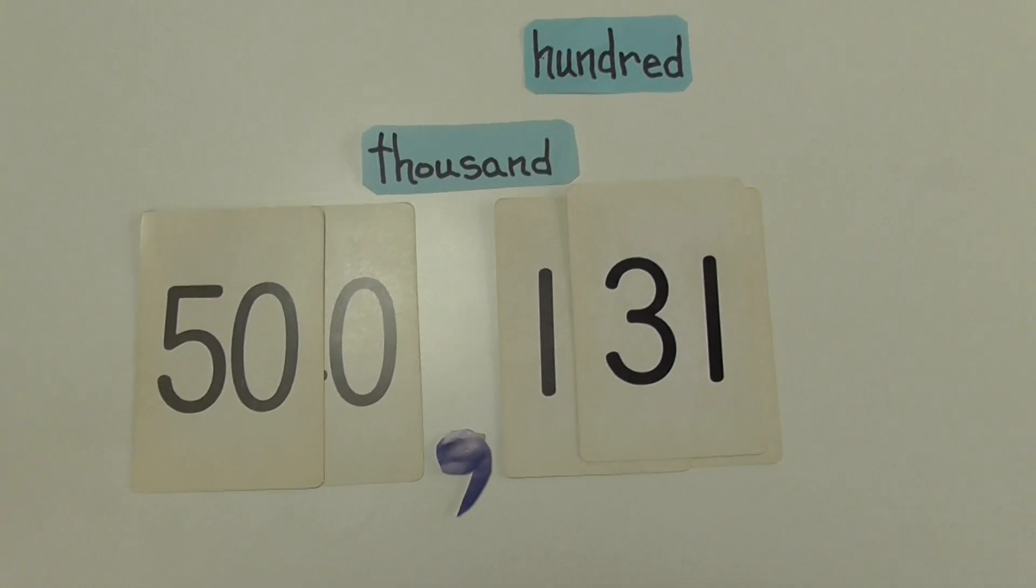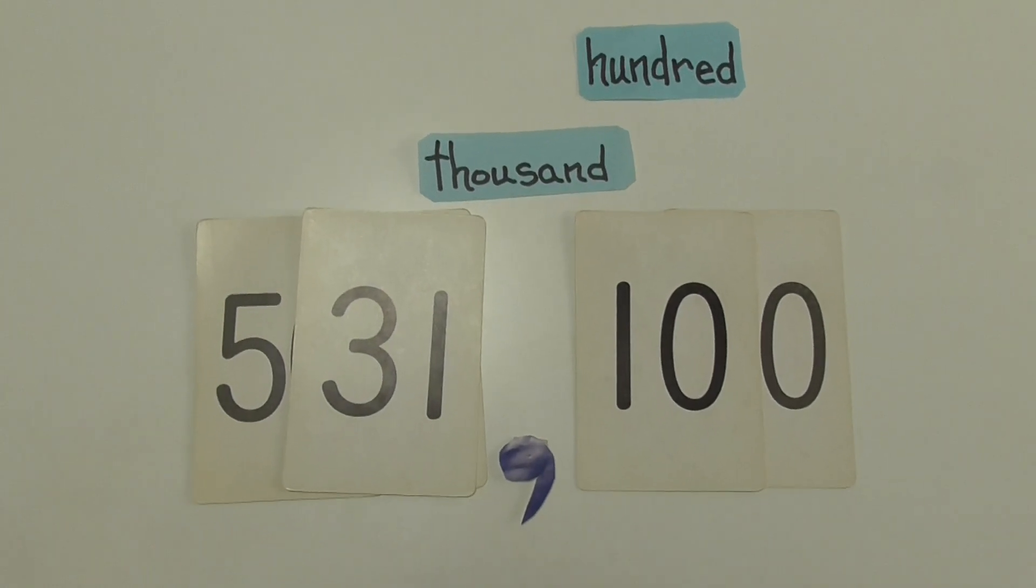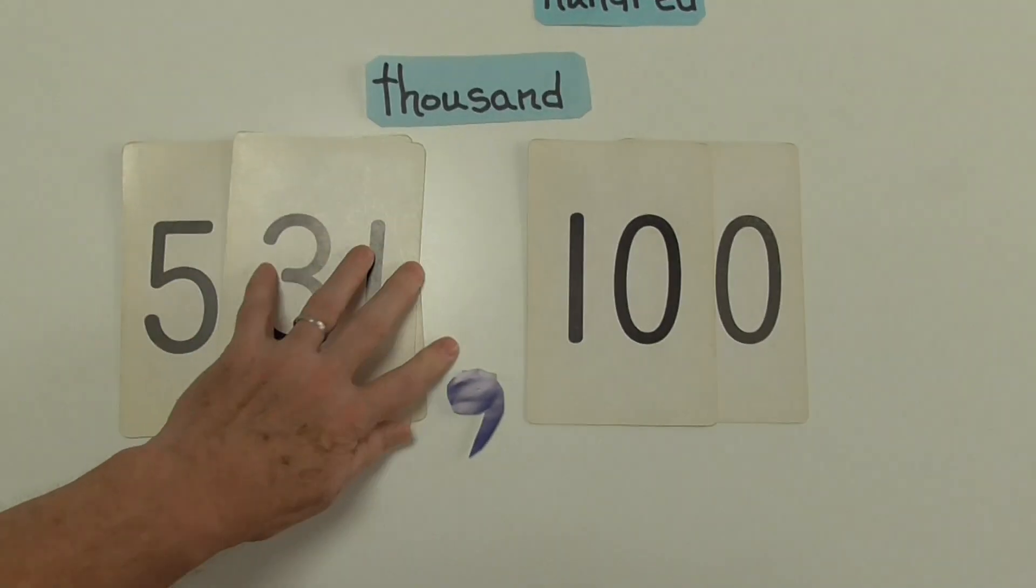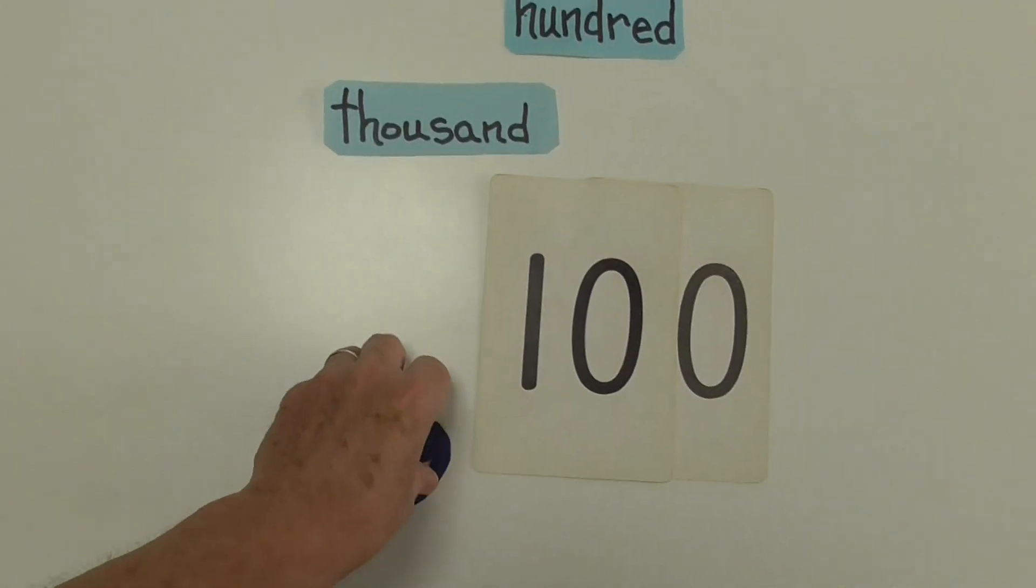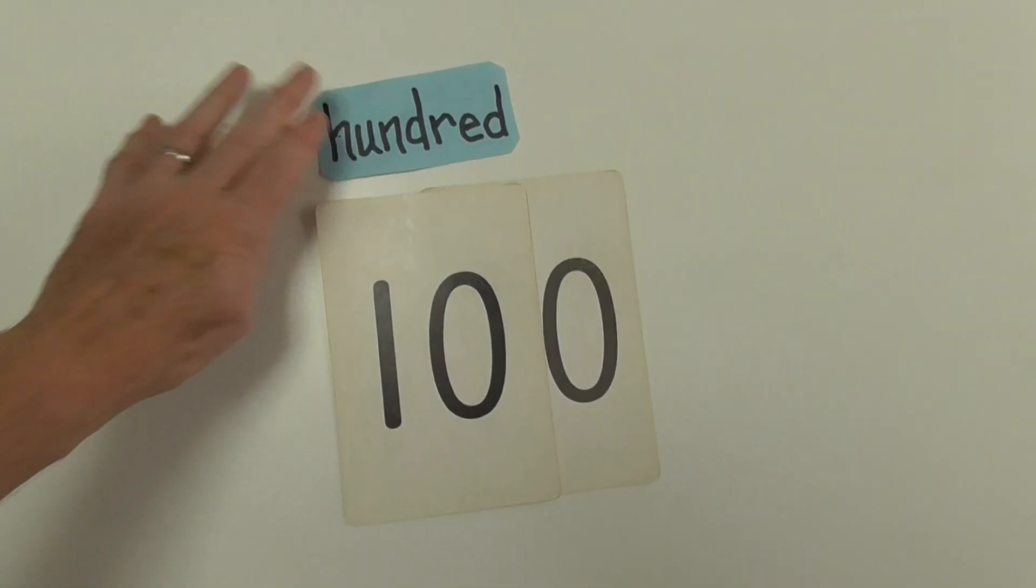500,000. Let's change that to 531,000. 100. Thousand's gone. Goodbye, thousand. And finally, we have 100.